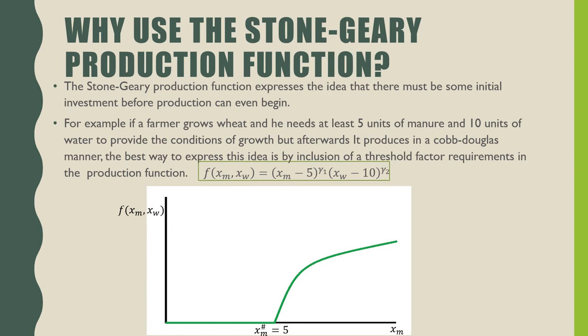Graphically speaking, if we want to see the returns from one input, let's say in our example manure, we would see no production happening at all until it hits 5, which is our threshold factor requirement. And then afterwards we would start seeing returns and diminishing returns from manure as an input.